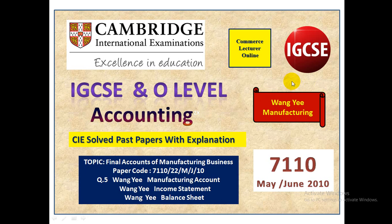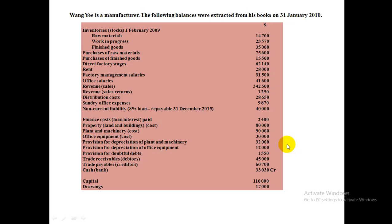Wang Yi Manufacturing — CIE and IGCSE Solutions, Accounting Topic: Final Accounts of Manufacturing Business. Paper code 711022MJ10, covering Manufacturing Income Statement, Balance Sheet, and Manufacturing Account. Wang Yi is a manufacturer.